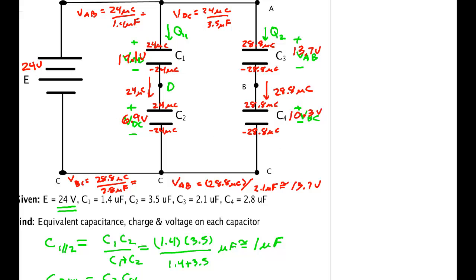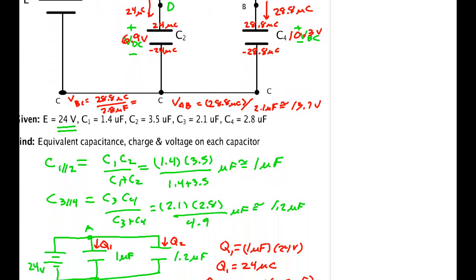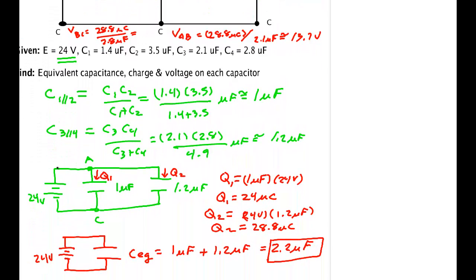Reduce the thing to a single capacitor. When you have a single capacitor and know the voltage across it, you can find the total charge. By the way, if we did 24 divided by 2.2, we would get 52.8 microcoulombs, the sum of these two Qs.